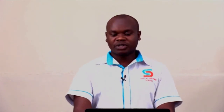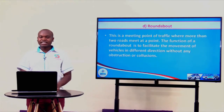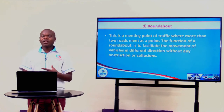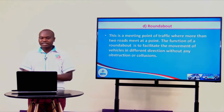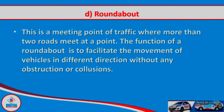Next we have a roundabout. This is a meeting point of traffic where more than two roads meet at a point. The function of the roundabout is to facilitate the movement of vehicles in different directions without causing any obstruction or collision. Next we are going to look at the rules of the roundabout. A roundabout has its rules, which it is an offence to go against.